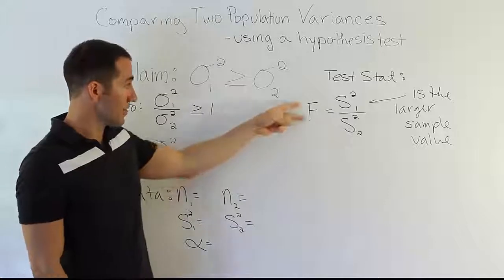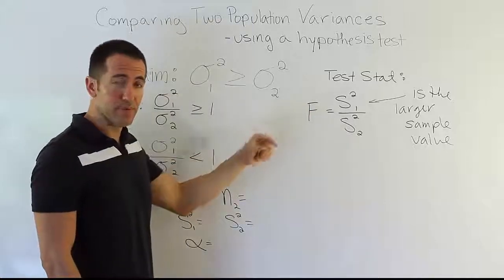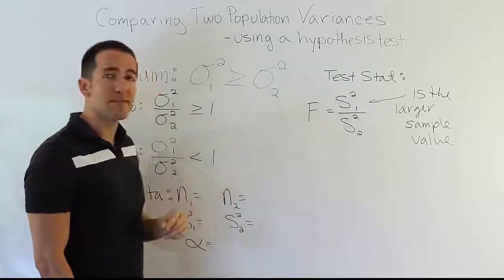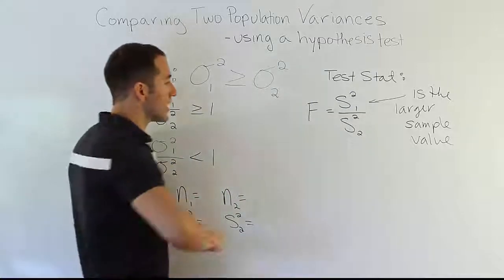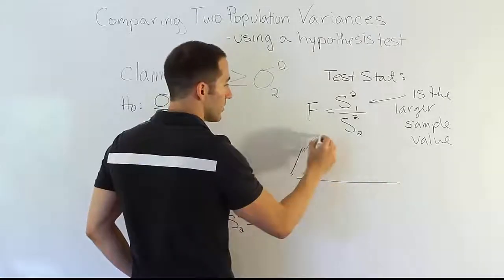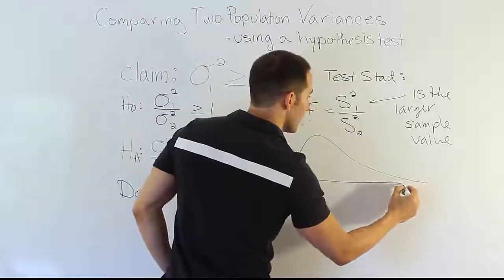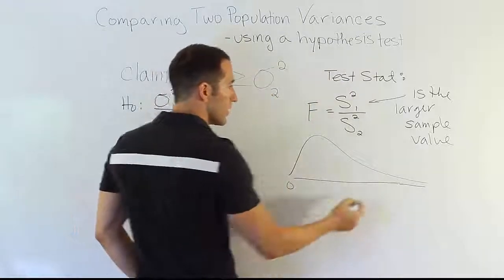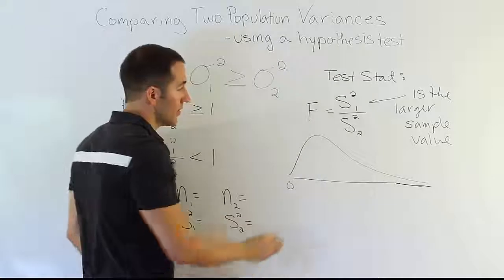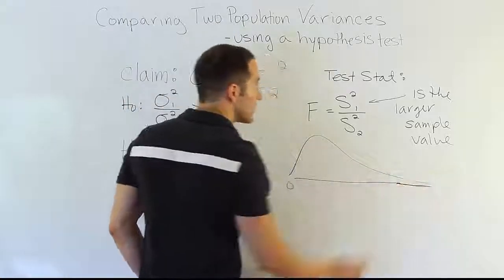Then we take that information and we plug it into a test statistic formula. It turns out the test stat formula has the symbol F before it. It's not a t-test, it's not a z-test. This is an F-test. So it's a new distribution that we haven't seen before. The F-distribution kind of looks like a skewed bell curve. It starts over here at 0 and then goes on and on into infinity, but it gets a long, skinny tail on the end.